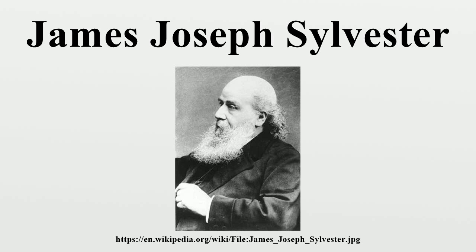Sylvester began his study of mathematics at St. John's College, Cambridge in 1831, where his tutor was John Hymers. Although his studies were interrupted for almost two years due to a prolonged illness, he nevertheless ranked second in Cambridge's famous mathematical examination, the Tripos, for which he sat in 1837. However, Sylvester was not issued a degree, because graduates at that time were required to state their acceptance of the 39 articles of the Church of England, and Sylvester, being an adherent of Judaism, refused to do so. For the same reason, he was unable to compete for a fellowship or obtain a Smith's Prize.